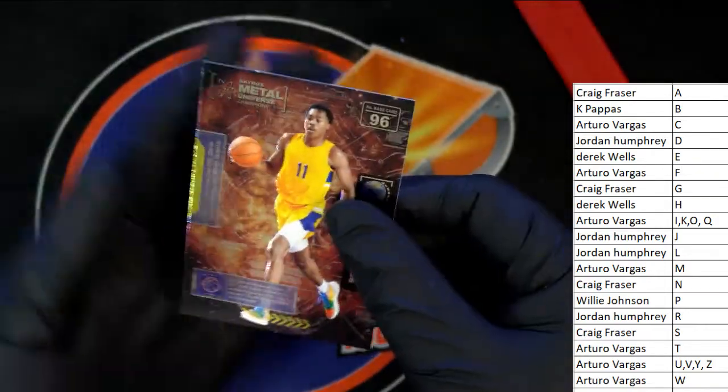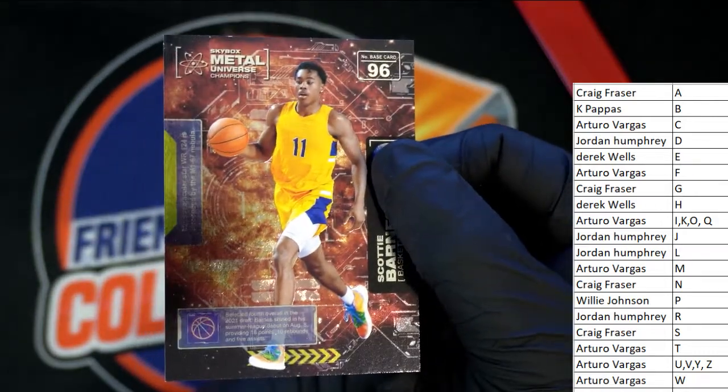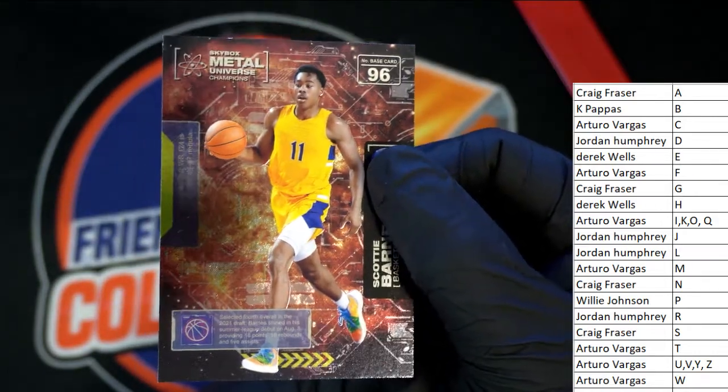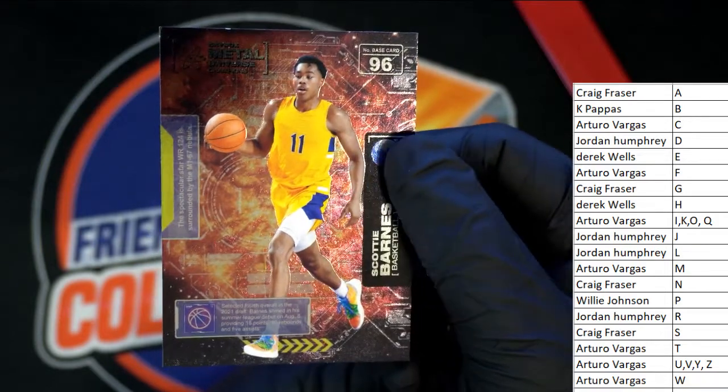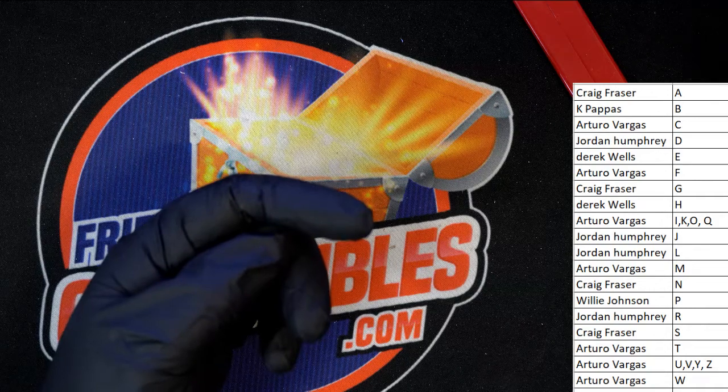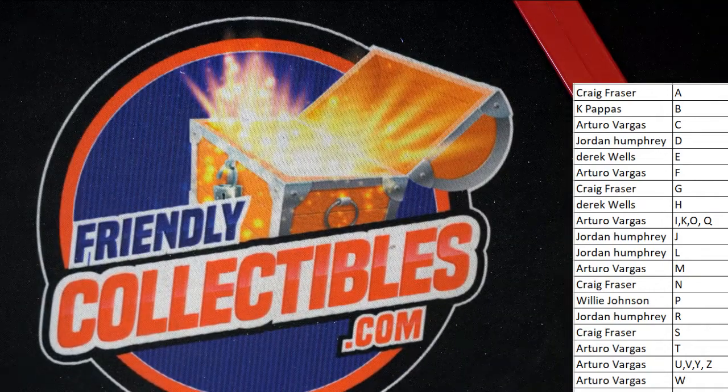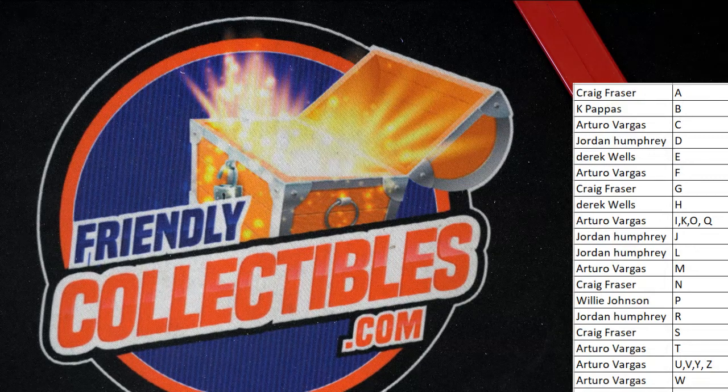And then the final card in the break is a Scotty Barnes for KP. Nice! Scotty Barnes rookie. I guess that's a rookie card of Scotty Barnes, isn't it? I think so. Yeah, it'd be a rookie card of him. I would assume that's a rookie.